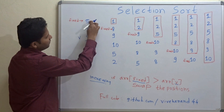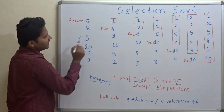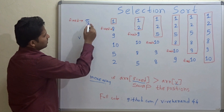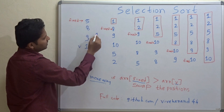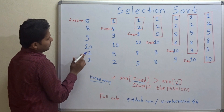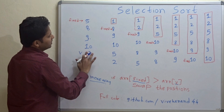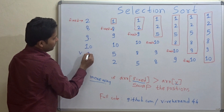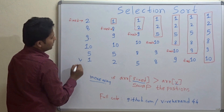Now 5 is compared with 9. Since 5 is less than 9, there is no need of swapping. The variable pointer is incremented again. 5 is less than 10, so no need of swapping. Then 2 will come here and 5 will come here, and the variable pointer will be incremented.